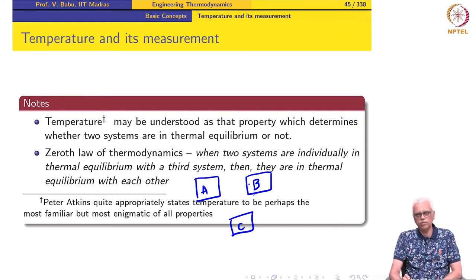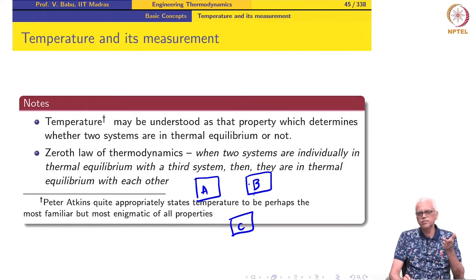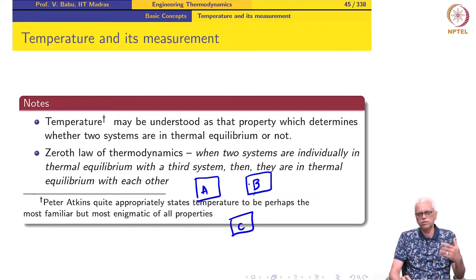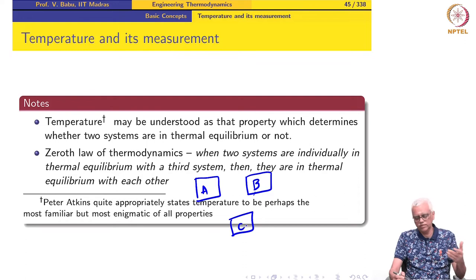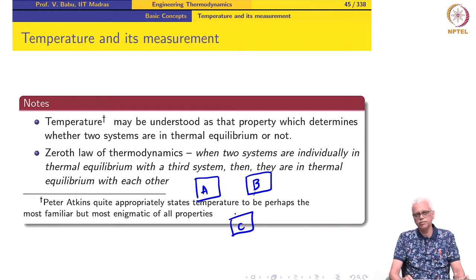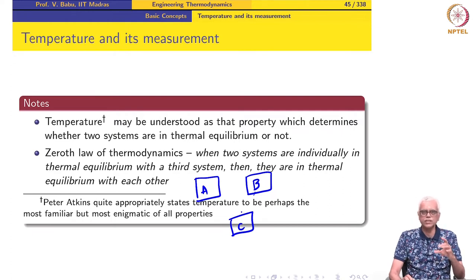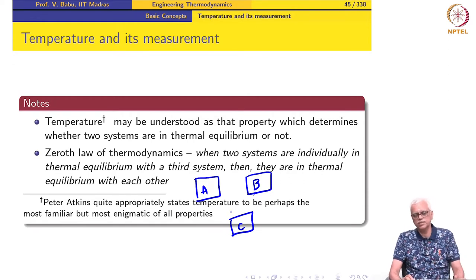By thermal equilibrium we mean that properties which are dependent on temperature will no longer change, and will be the same for the two blocks. Some of these properties include volumetric expansion of the block. If block A is hotter and block C is colder when brought together, the hotter block will start to contract and the colder block will start to expand, and eventually when they reach thermal equilibrium, neither block will expand or contract — that means equilibrium is attained.